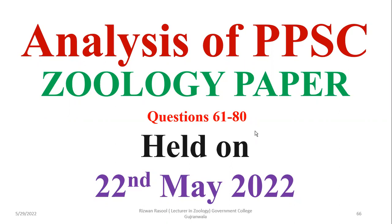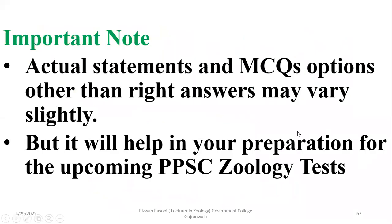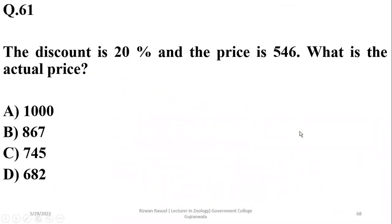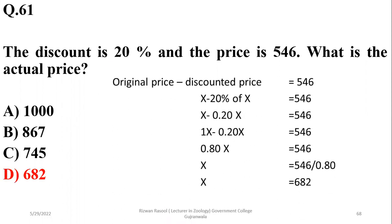Let's move to the next part of this sequence, questions 61 to 80, which are being discussed in this short video. Question 61 was a general knowledge mathematical question: the discount is 20% and the price is 46 — what is the actual price?